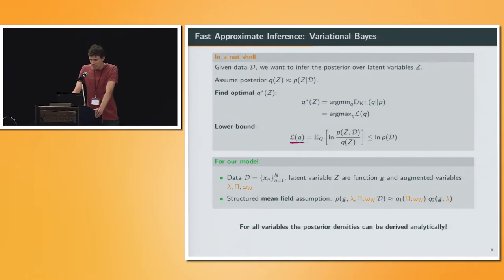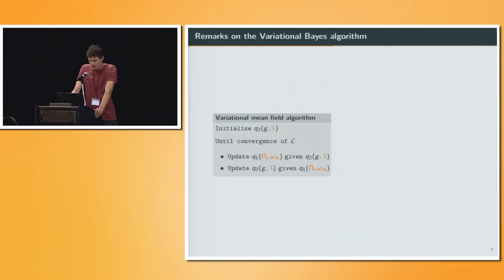I have to emphasize we don't do any functional assumptions over these factors. It turns out, via our augmentation scheme, that for all variables the posterior densities can be derived analytically, which allows us to not use gradient descent, but just solve these factors analytically. We initialize first the factor q2 to some value, and then until the lower bound converges, we update q1 given q2 and vice versa.